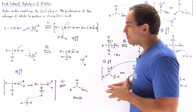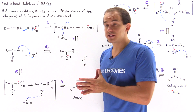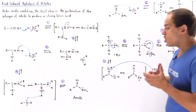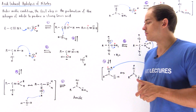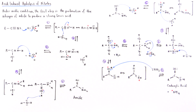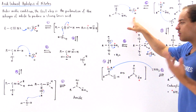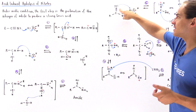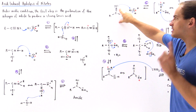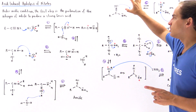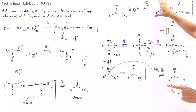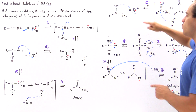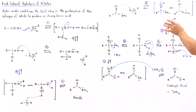The amide in the presence of acidic conditions undergoes an acid induced hydrolysis reaction, transforming into our carboxylic acid. The hydronium protonates this oxygen to once again transform this weak Lewis acid into a strong Lewis acid. We have resonance stabilization and the hydronium is transformed into a water molecule.